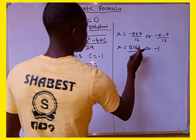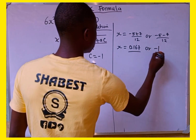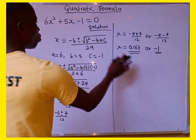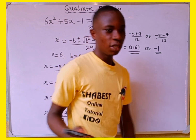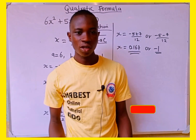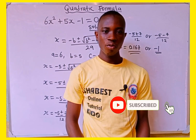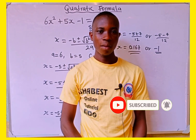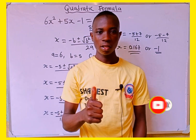Therefore, 0.167 and negative 1 are the two roots of this quadratic equation. Thanks for watching, and please don't forget to subscribe to my YouTube channel. Also follow me on Facebook, TikTok, and Instagram at Shabbat's Online Tutorial. Thank you.